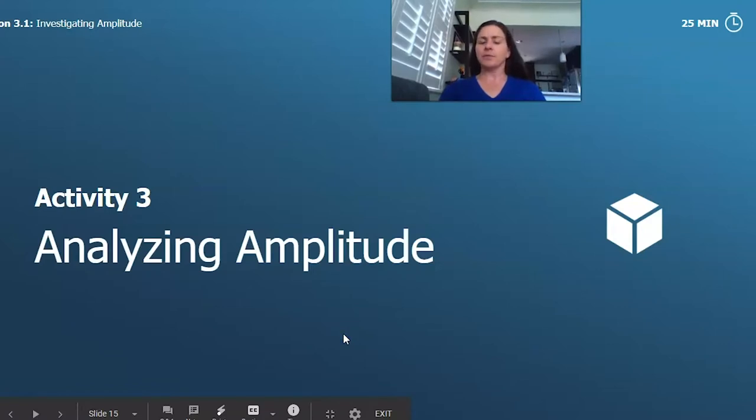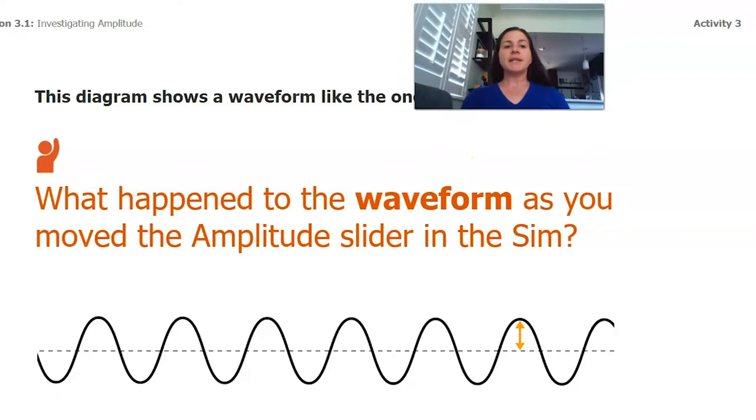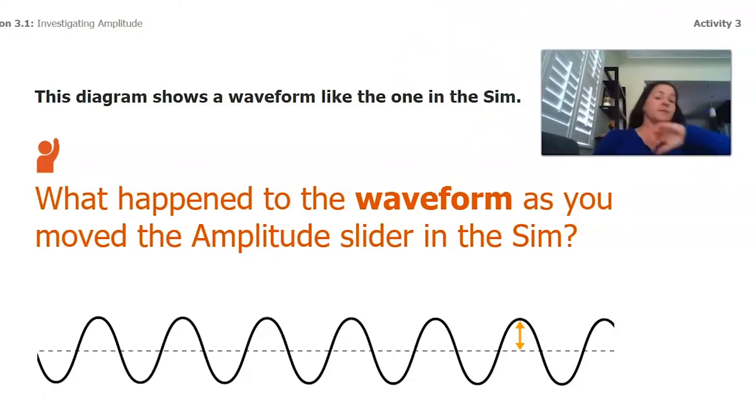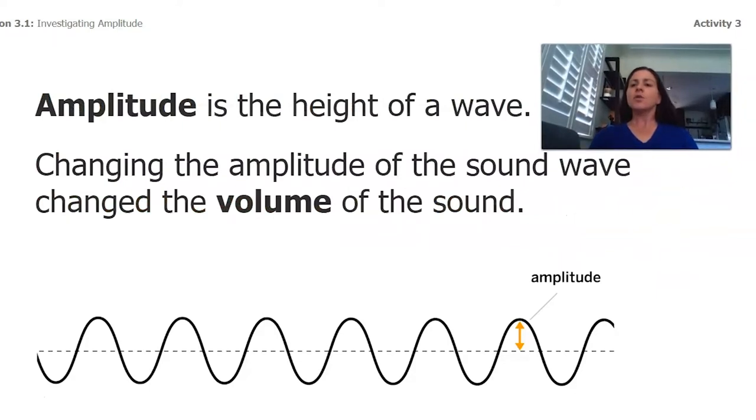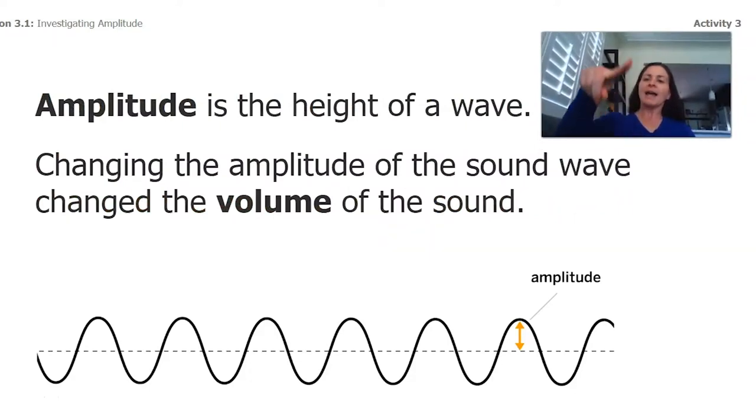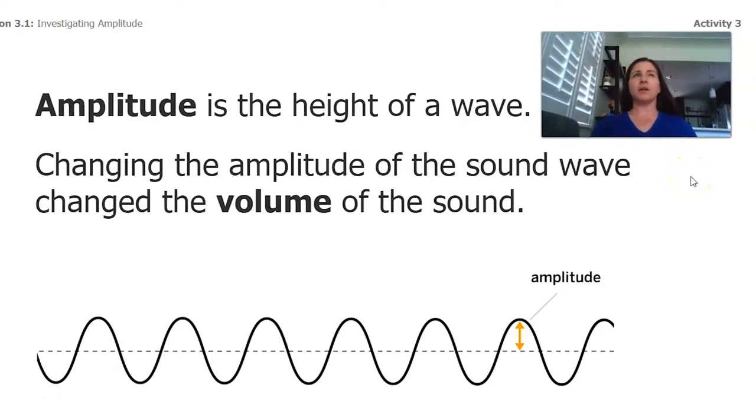And so that's talking through what we observed. If you observed the same thing as me, you saw that when I brought the amplitude up, that wave got bigger. When I brought the amplitude down, that wave got smaller. So let's think through that. So this diagram shows a waveform, like the one in the sim. So what happened to the waveform as we moved the amplitude slider in the sim? Well, we just thought about that for our page 47. So it looked like amplitude is how high that wave was. When we made the amplitude higher, the wave got higher. And another thing that I noticed, and you probably noticed too, is the sound got louder. Makes me think that maybe we're coming up to a new understanding here.